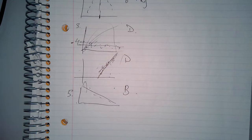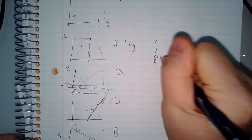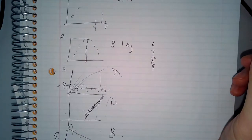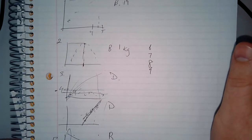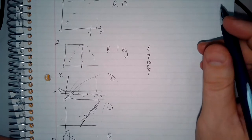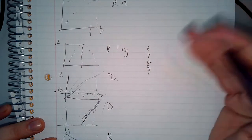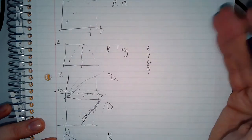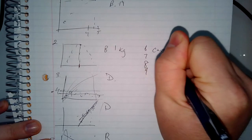Numbers six through nine: determine if each is an association or causation. Number six: a controlled experiment showed a positive association between the number of hours using headphones and the level of hearing loss. The more you keep an earbud in your ear, the more hearing loss you'll have. I would say that is a causation.